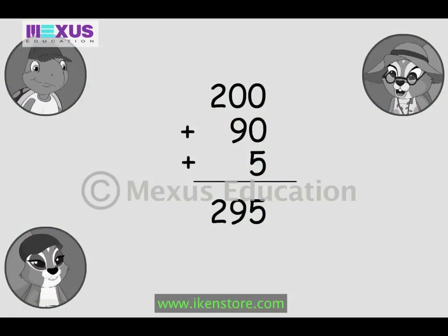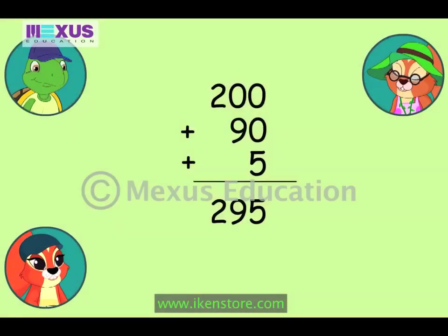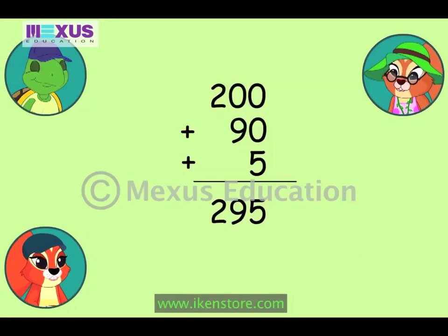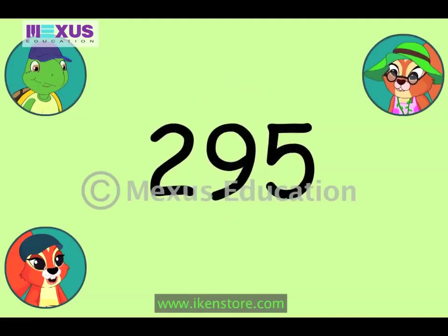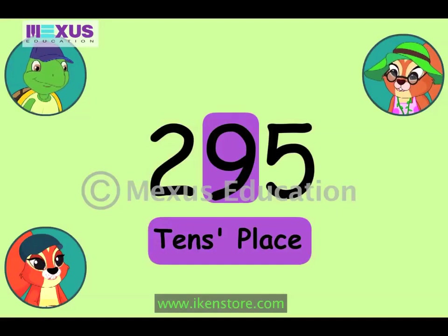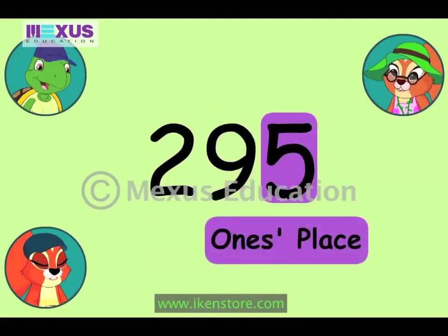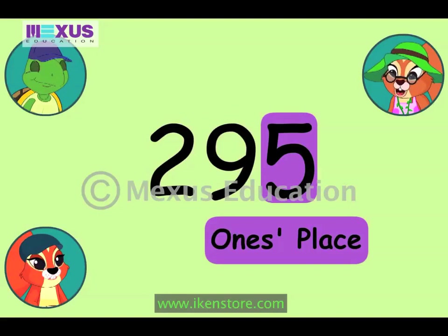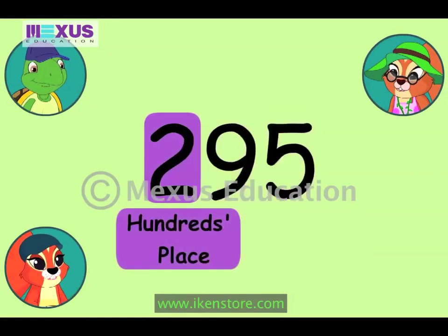Now that you have learnt about place values, are you ready to identify the number according to its place value? Yay! Yes, we are ready. Great. Amber, which number is in the tens place? The number nine. Correct. Max, which number is in the ones place? The number five. Very good. And which number is in the hundreds place? The number two.